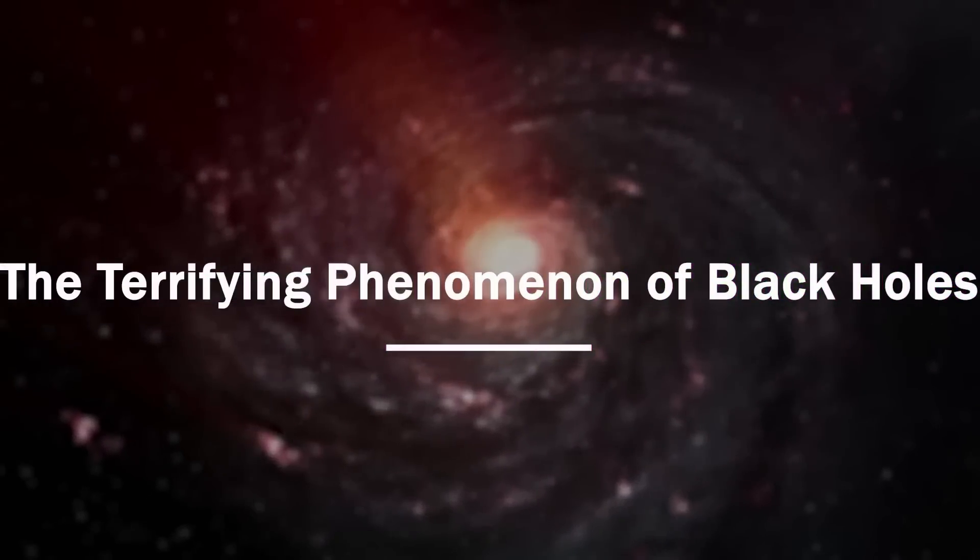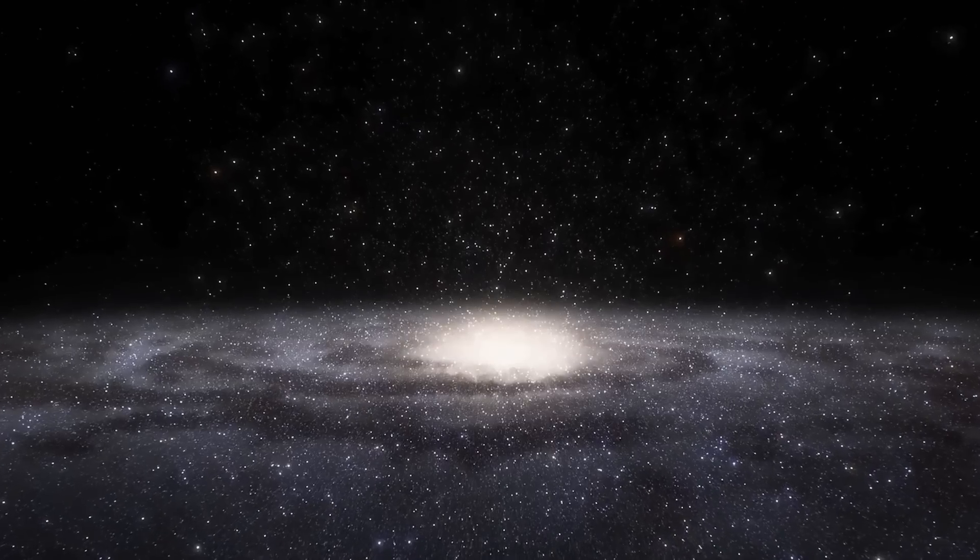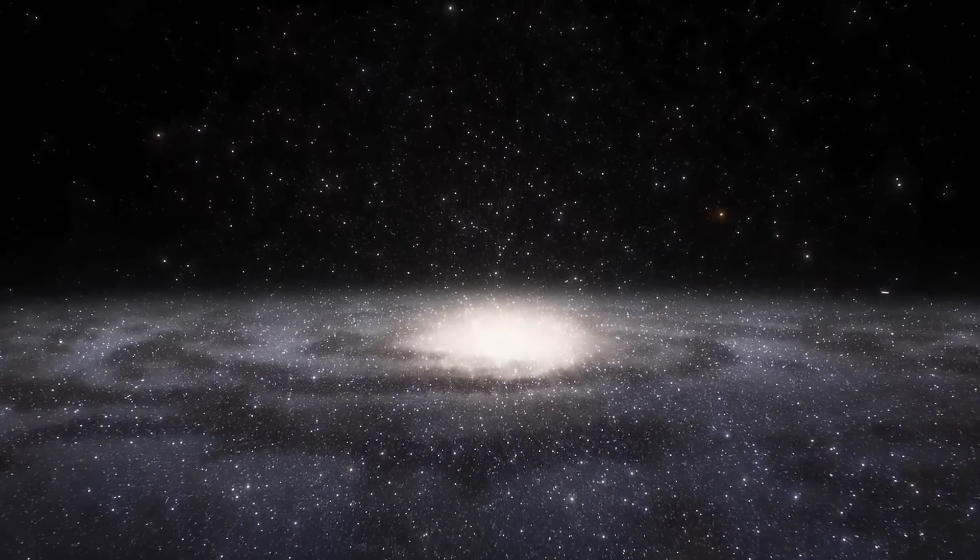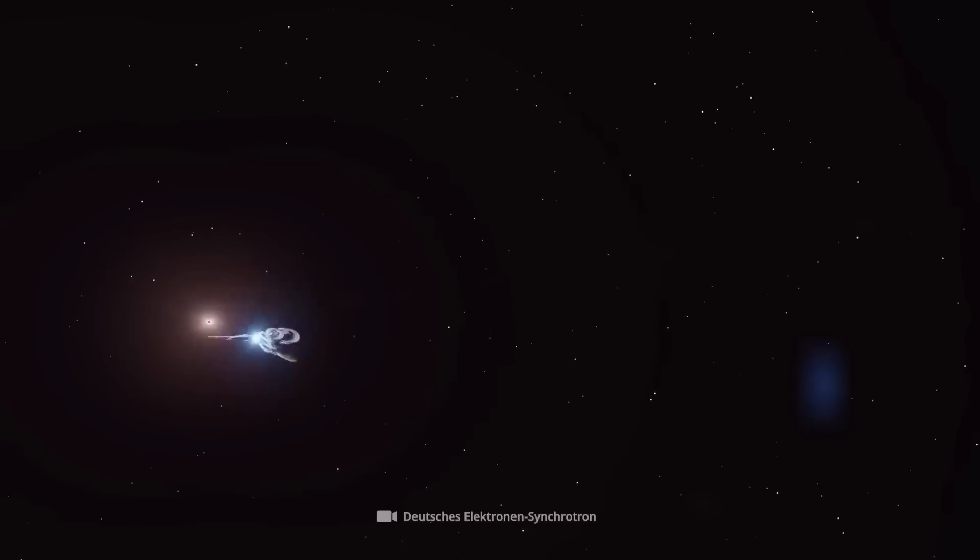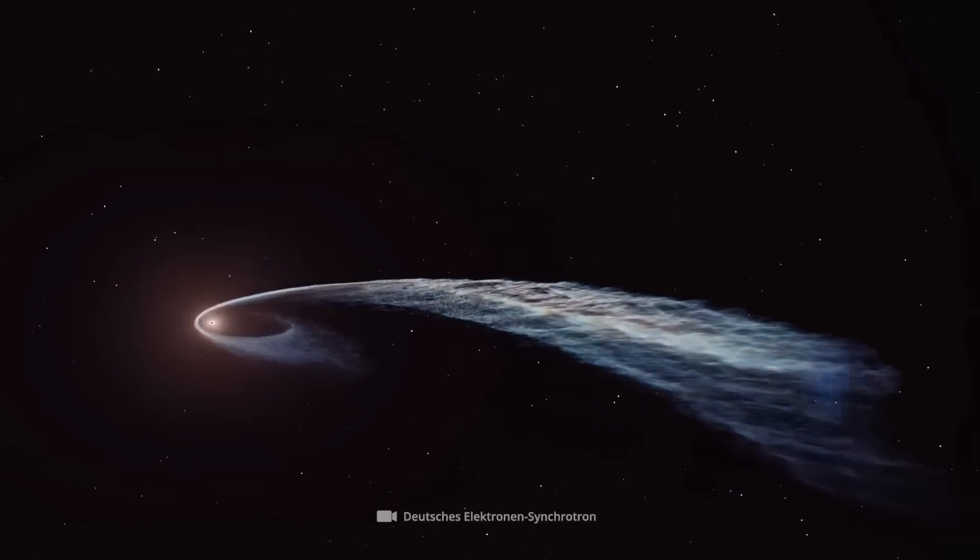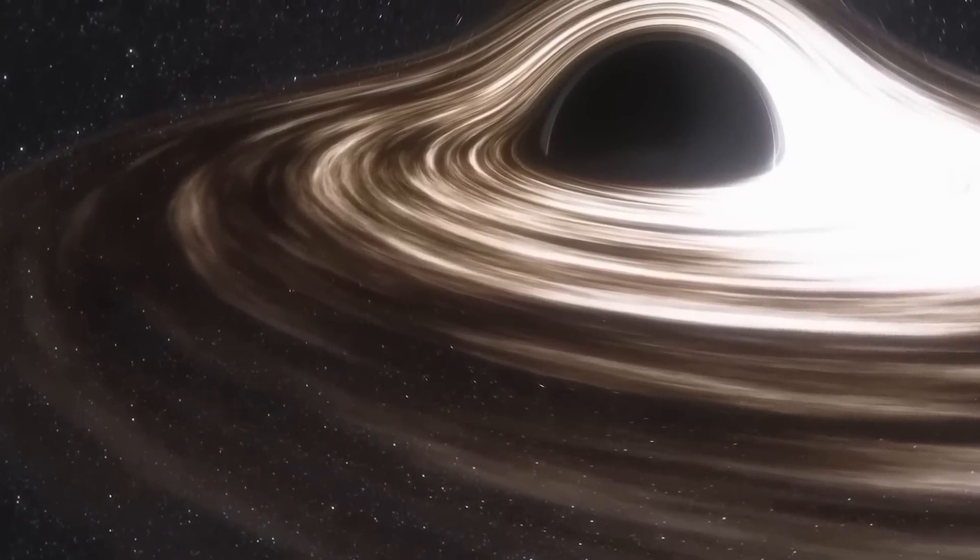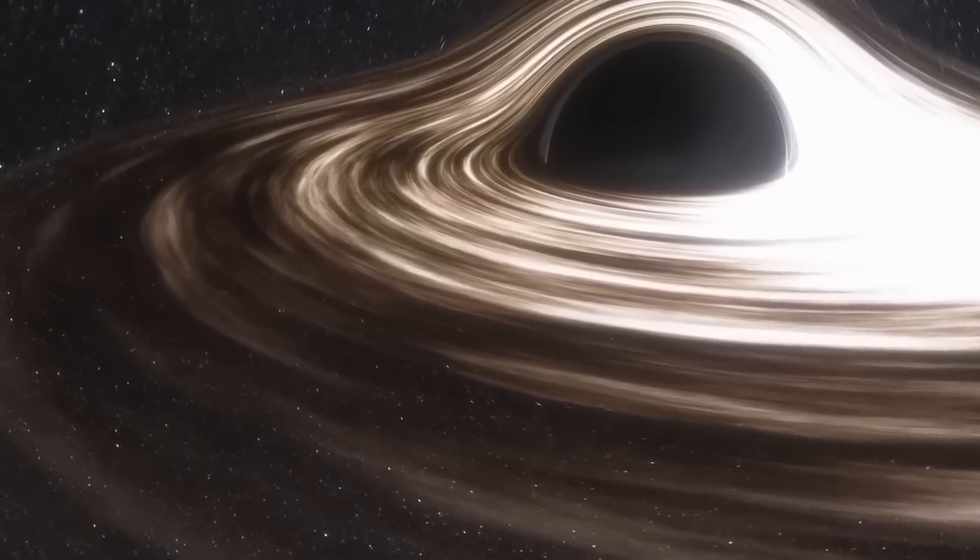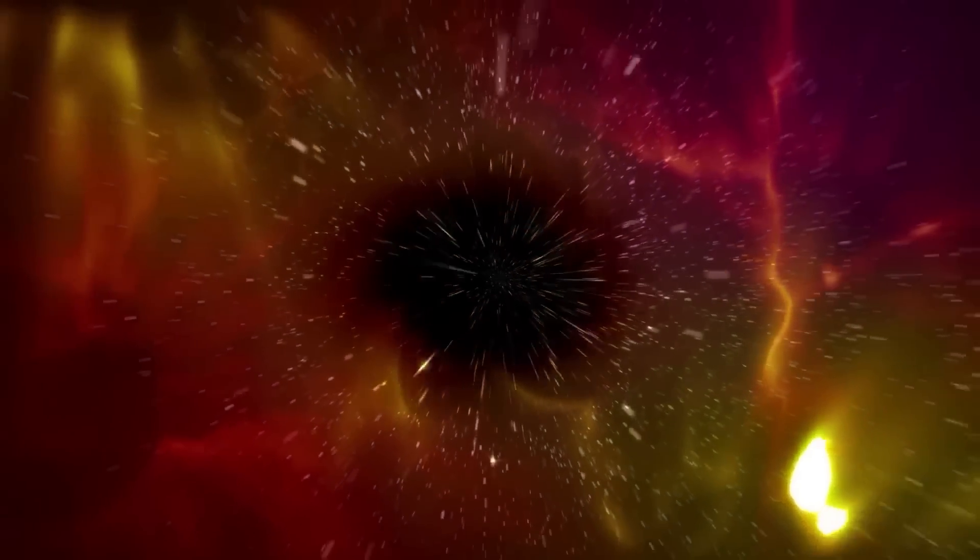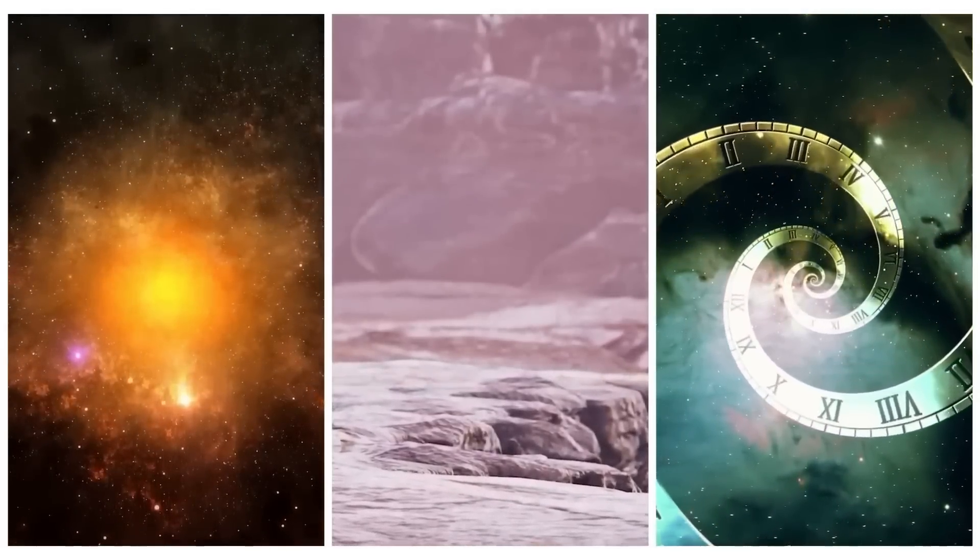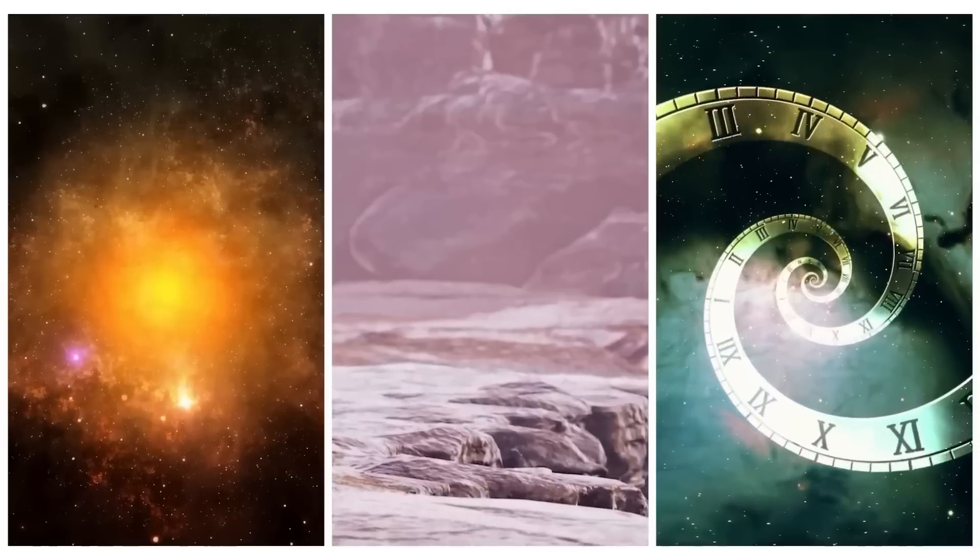The terrifying phenomenon of black holes. A black hole is a region of space where the gravitational force is so strong that nothing, not even light, can escape from it. Black holes can be formed when a star collapses at the end of its life, and they can range in size from a few times the mass of the sun to millions or billions of times the mass of the sun. The probability that there is a black hole in the unobservable universe is difficult to determine, as the concept of the unobservable universe refers to the parts of the universe that are beyond the limits of our current ability to observe.